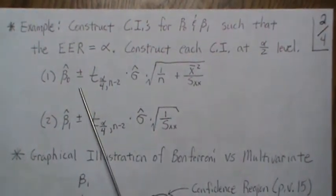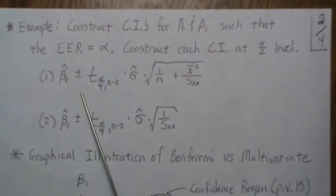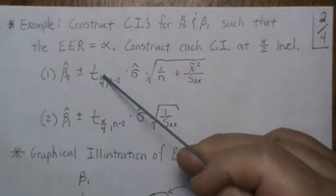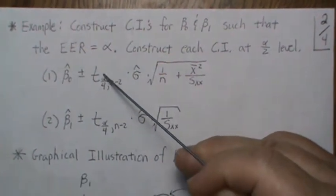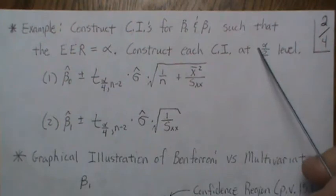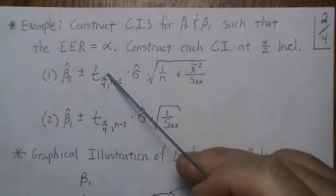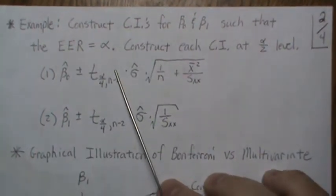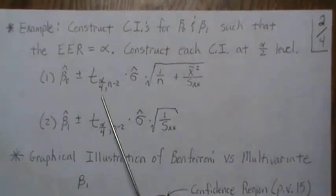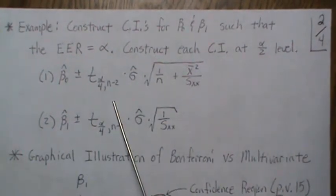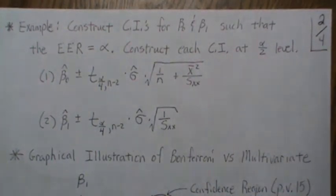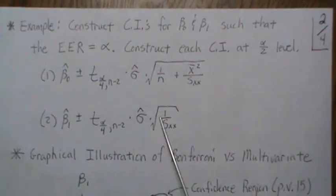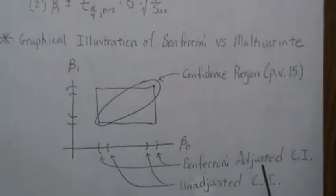This is the confidence interval for beta 0, but normally this piece right here would be alpha over 2. But we replace alpha with alpha over 2, so then you have alpha over 4. If you conduct these individual tests at the alpha over 2 level—which means you divide it by 2 when doing confidence intervals—these two would maintain that type 1 error rate.